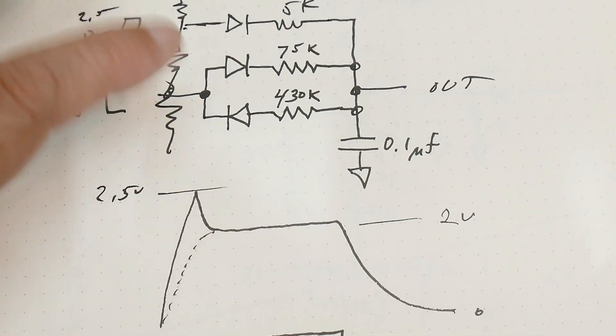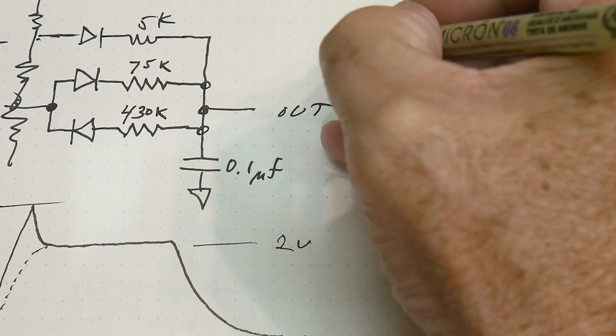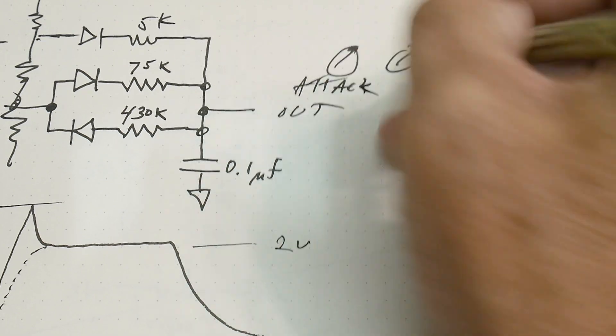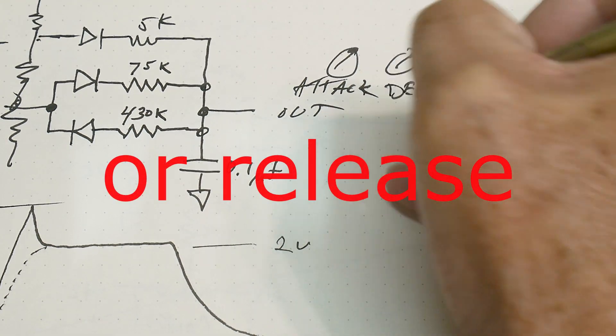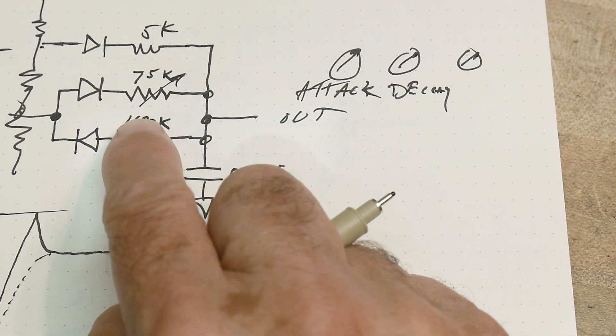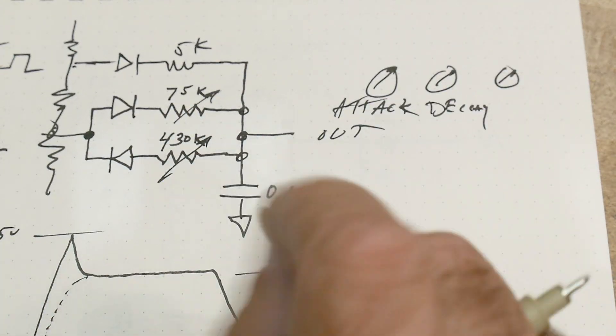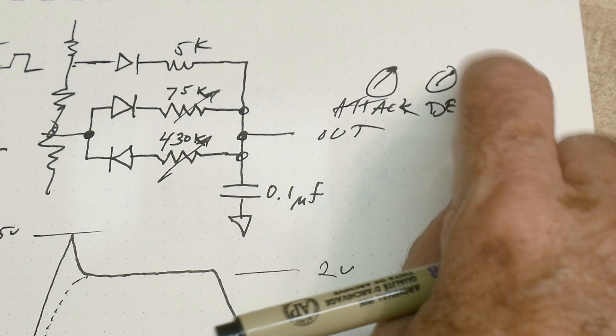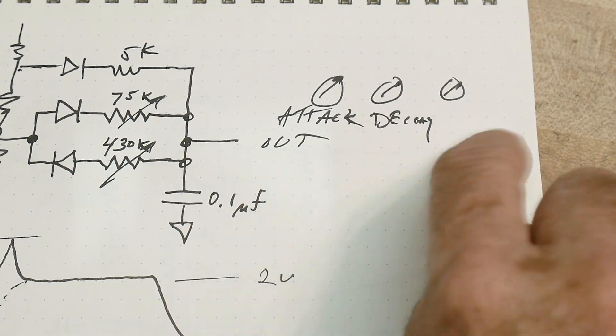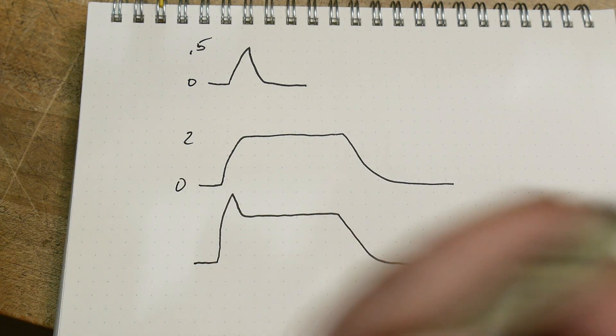So anyway I need to work out what values I need. Usually what you have then is on the front panel you'll have a series of knobs. One is called attack and one is called decay. Attack is going to basically be this potentiometer - we're going to vary this potentiometer, that'll be the attack, the rising one. The decay will be this potentiometer, so you're going to adjust the decay. And the other one might be sustain or something like that - three different knobs for these three different things.